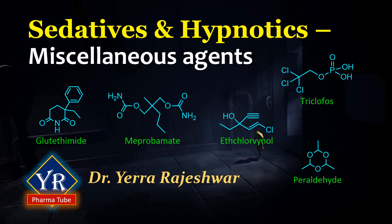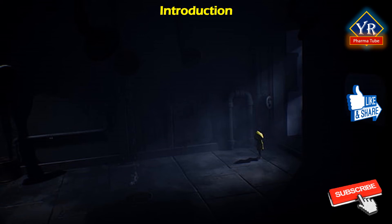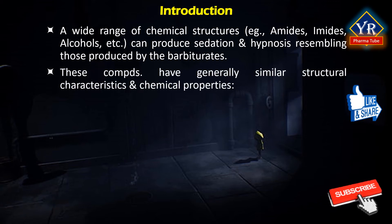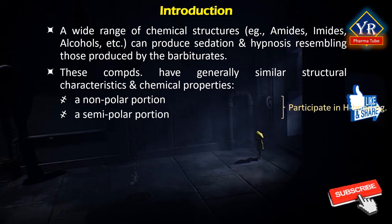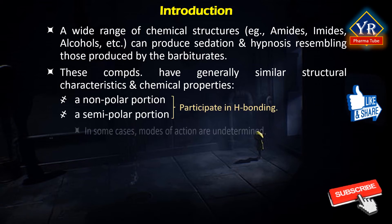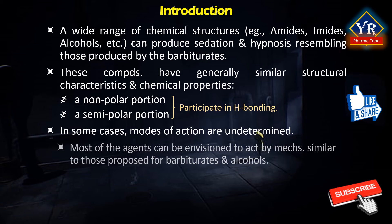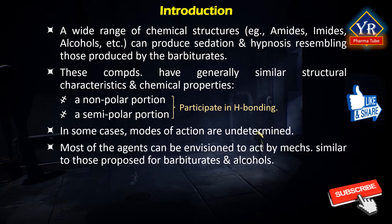In this lesson, we shall learn the miscellaneous agents of sedatives and hypnotics. A wide range of chemical structures, for example amides, imides, alcohols, etc., can produce sedation and hypnosis resembling those produced by the barbiturates. Despite this apparent structural diversity, the compounds have generally similar structural characteristics and chemical properties: a non-polar portion and a semi-polar portion that can participate in hydrogen bonding. In some cases, modes of action are undetermined. As a working hypothesis, most of the agents can be envisioned to act by mechanisms similar to those proposed for barbiturates and alcohols.